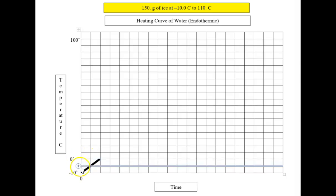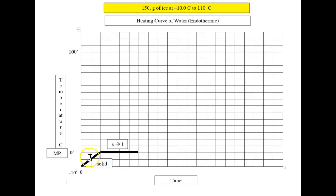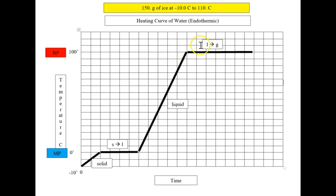The temperature scale goes from minus 10 all the way up to 100 plus. The first line represents the solid phase. The second line represents the melting point at zero degrees, where the temperature does not change. Temperature goes from minus 10 up to zero, then stays the same at the melting point until all the solid melts. Then we move on to the liquid phase, drawing a straight line from zero degrees up to 100 degrees.